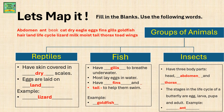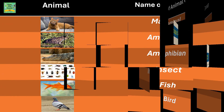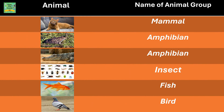Insects. They have three body parts: head, abdomen, and thorax. The stages in the life cycle of a butterfly are egg, then they turn into larva, then pupa, and finally an adult. For example, an ant.